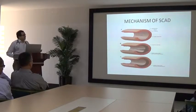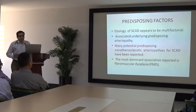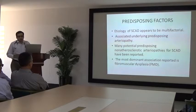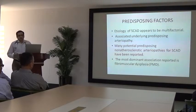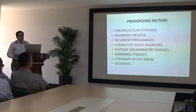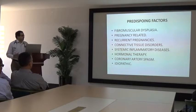The etiology of spontaneous coronary artery dissection appears to be multifactorial, associated commonly with underlying predisposing arteriopathy. Many potential non-atherosclerotic arteriopathies have been reported. The most common predisposing factors are: fibromuscular dysplasia, pregnancy-related changes, connective tissue disorders like Marfan syndrome, systemic inflammatory disease, hormonal therapy, coronary artery spasm, and idiopathic causes.